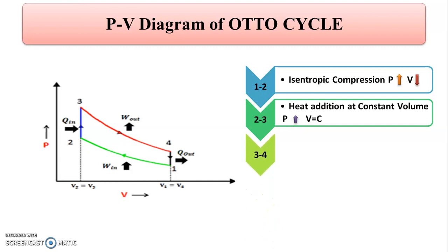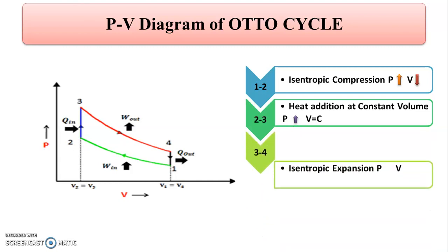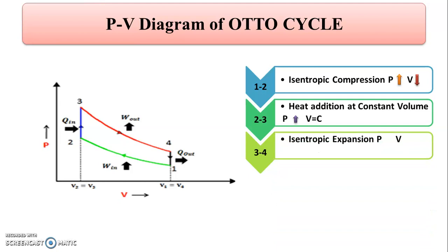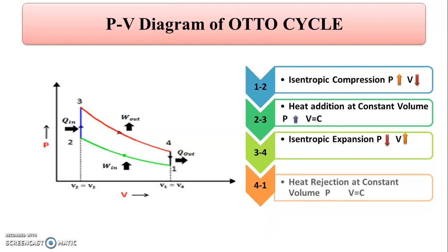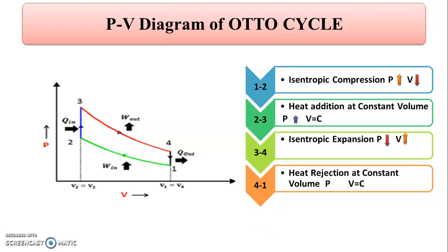Process 3 to 4 is isentropic expansion. During isentropic expansion, the pressure decreases from P3 to P4, and the volume increases from V3 to V4. Process 4 to 1 is heat rejection at constant volume, where the volume remains constant — V1 equals V4 — and the pressure decreases from P4 to P1.